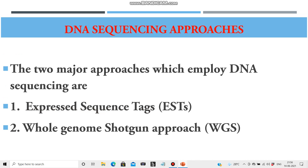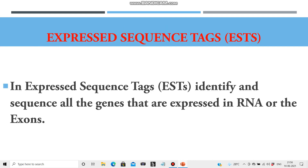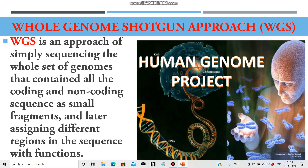The two major approaches which employ DNA sequencing are expressed sequence tags or ESTs, and whole genome shotgun approach or WGS. In expressed sequence tags, all the genes that are expressed in RNA — the exons — are sequenced. Whereas whole genome shotgun approach is a blind approach in which the whole genome, containing all coding and non-coding sequences (exons as well as introns), is sequenced, and regions are later assigned functions.